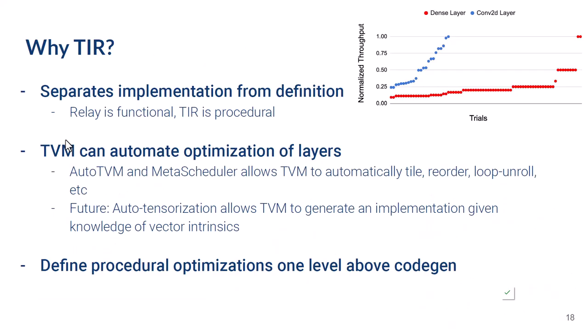Why bother with TIR? A simpler approach would be to go straight from Relay to C and LLVM. Well, TIR allows TVM to split apart the problems of model parsing and implementation. More importantly, TIR allows TVM to define procedural optimizations over the model that are agnostic of the output language. So an optimization like common sub-expression elimination can be applied alike to GPUs, CPUs, or any other accelerator. TVM can also leverage TIR to perform optimizations such as tiling, loop reordering, vectorization, and tensorization — semi-automatically by learning from your hardware platform the fastest way to arrange these optimizations for an operator.